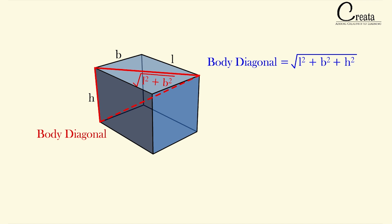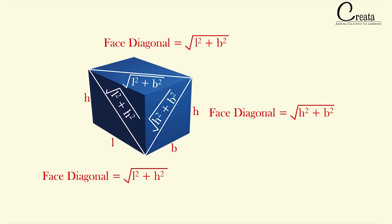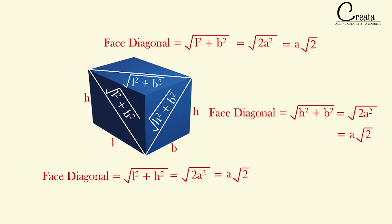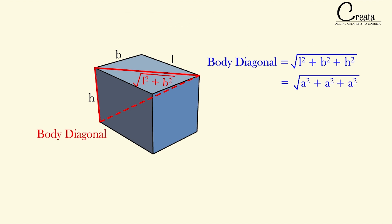All the fundamentals for the cube are the same as for the cuboid; we just replace L, B, and H with A. For the cube, the face diagonal becomes A√2, and all face diagonals will be equal to A√2. The body diagonal of the cube becomes A√3. Again, no need to memorize these formulas — just understand the basic concept and you will get the output.